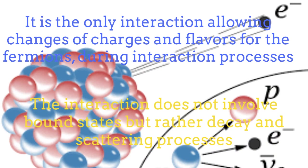First, it is the only interaction allowing possible changes of flavor and changes in the charge for the fermions during the interaction processes. Additionally, the weak interaction doesn't allow the existence of bound states, as the other interactions do, but rather appears for processes involving decay of products as well as scattering.